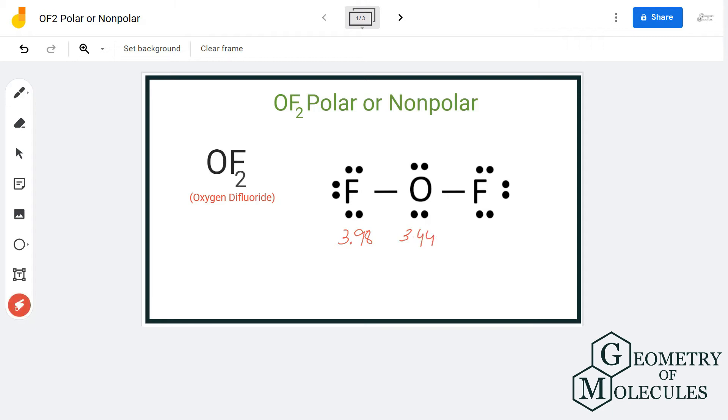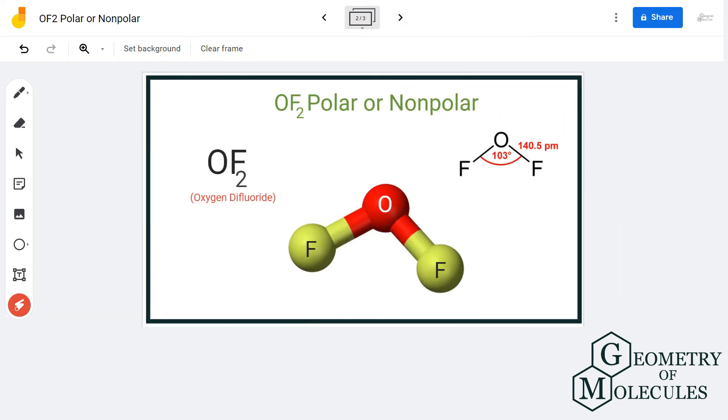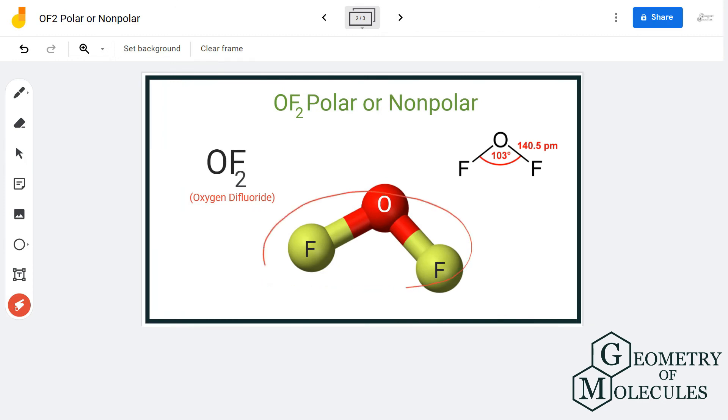Now you might wonder that the Lewis structure of this molecule suggests that the molecule is linear, but that is not the case. If you look at the shape here, you will see that these two lone pairs of electrons cause a bend in the shape, and the shape of the OF2 molecule is actually bent.